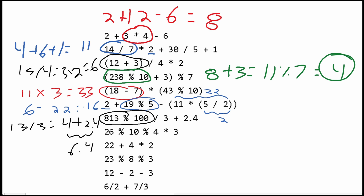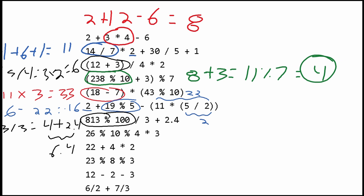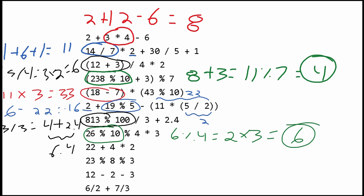In the next part, we have 26 modulus 10, which gives us 6. Then we take the modulus of that using 4, and that is going to be 2. We multiply this by 3, and that gives us 6 as the answer.